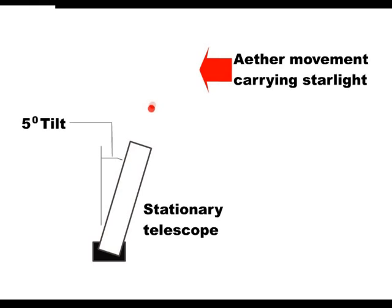As we see here, the light would be coming in at the same angle and the telescope would still have to be tipped 5 degrees. So tipping the telescope does not tell us whether it is the starlight moving or the telescope moving.